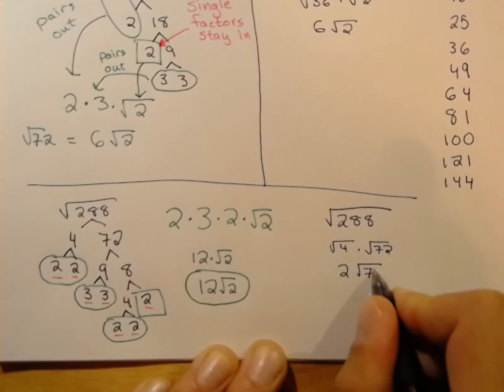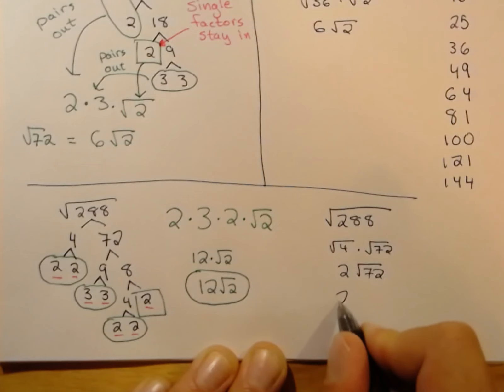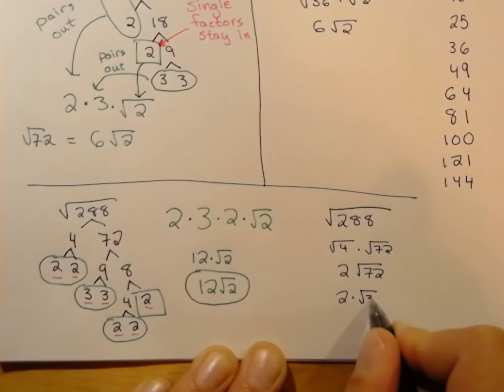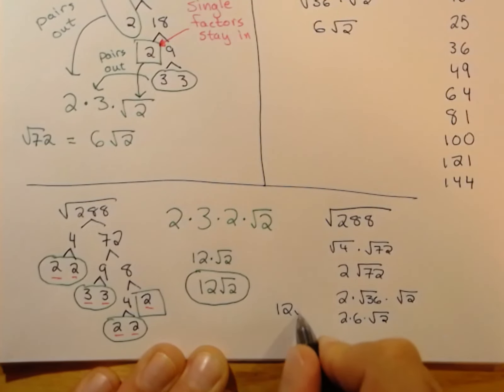But then 72, you may realize that 72 is 36 times 2. So 2 times √36 times √2. Well, √36 is just 6. 2 times 6 times √2. We get 12√2 again.